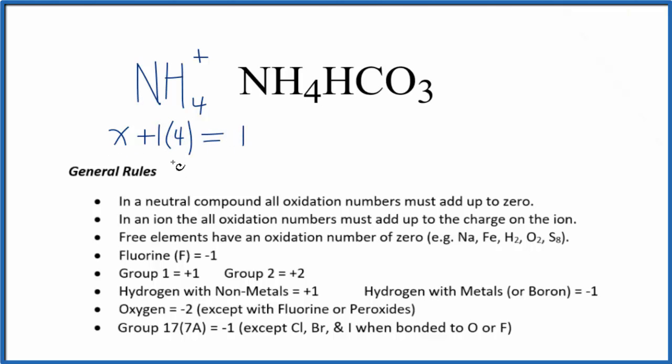We subtract 4 from each side. X is going to equal minus 3. So the oxidation number on the nitrogen here is going to be minus 3. So I'll write it over here too. Minus 3 for this nitrogen.